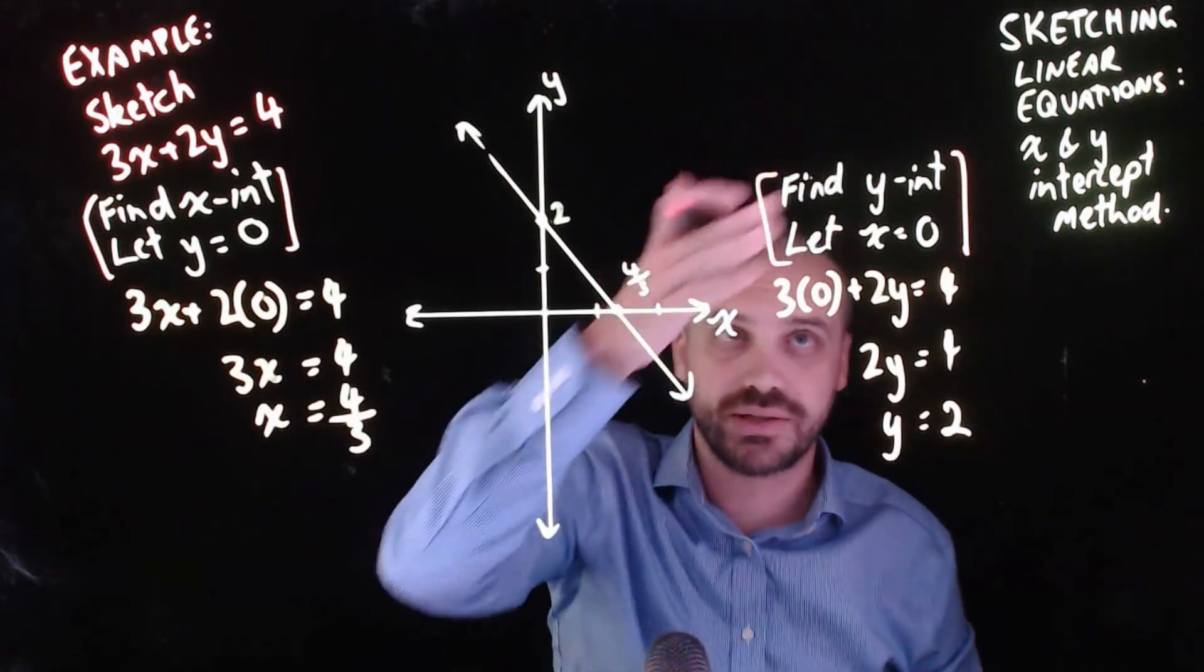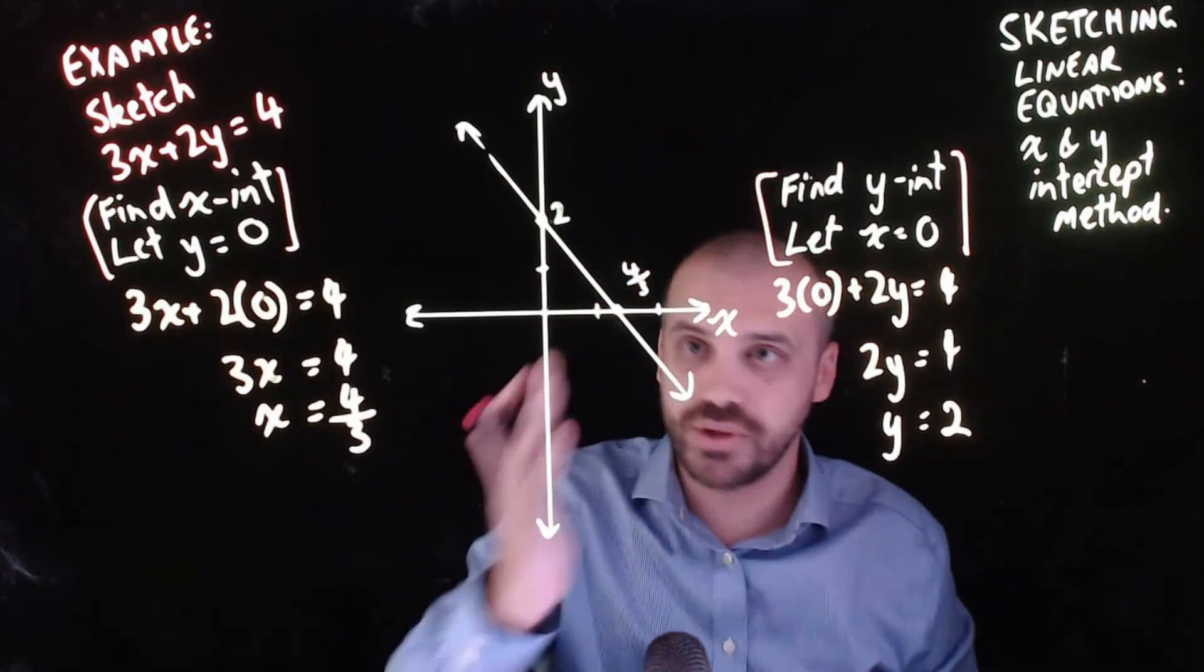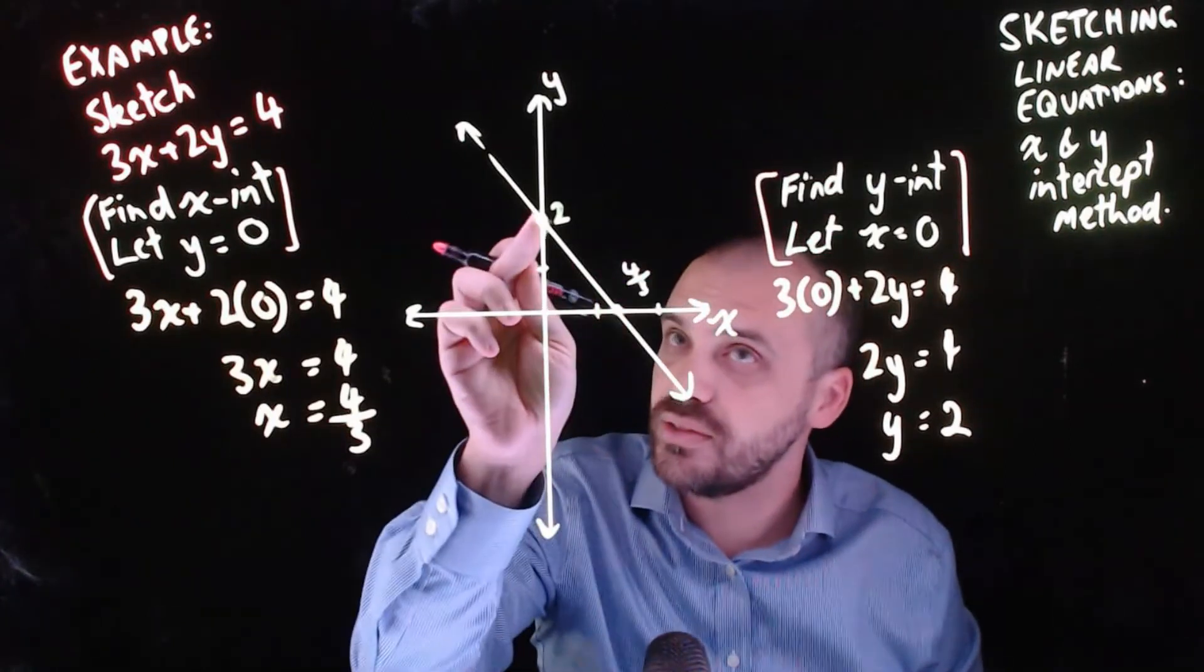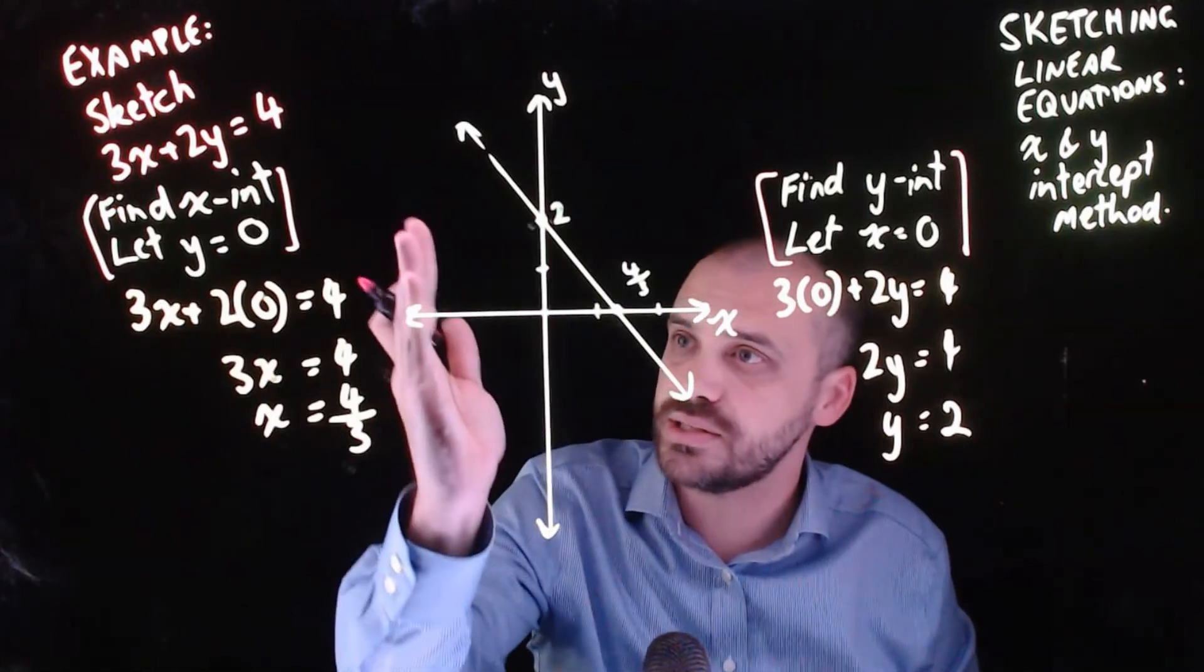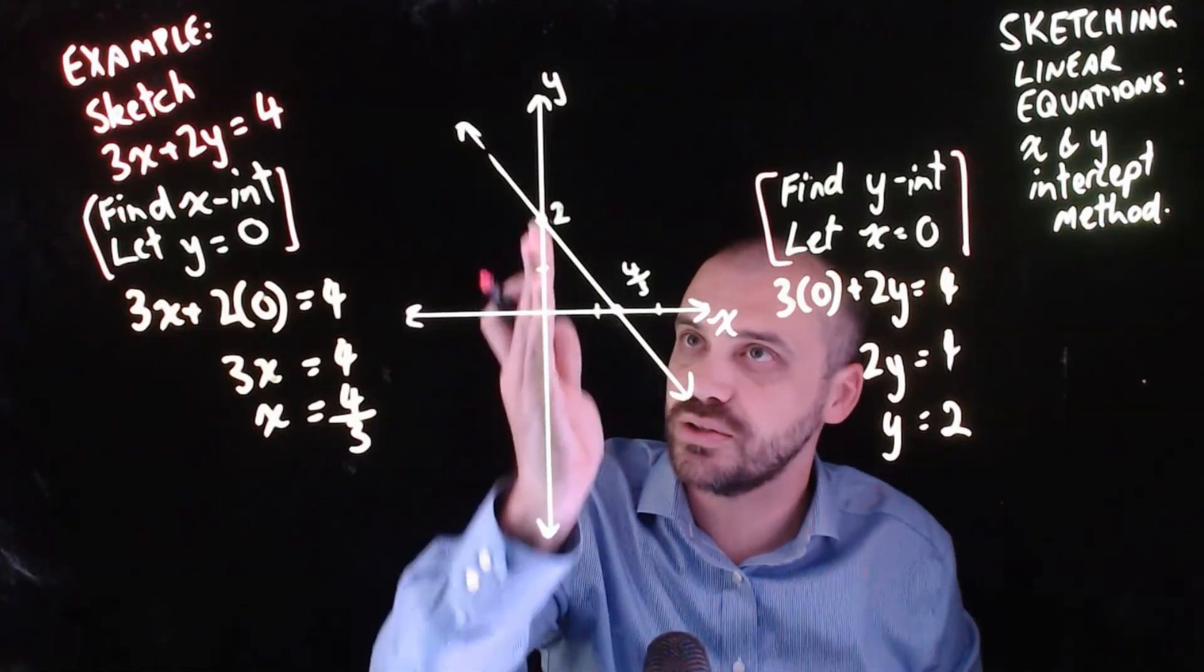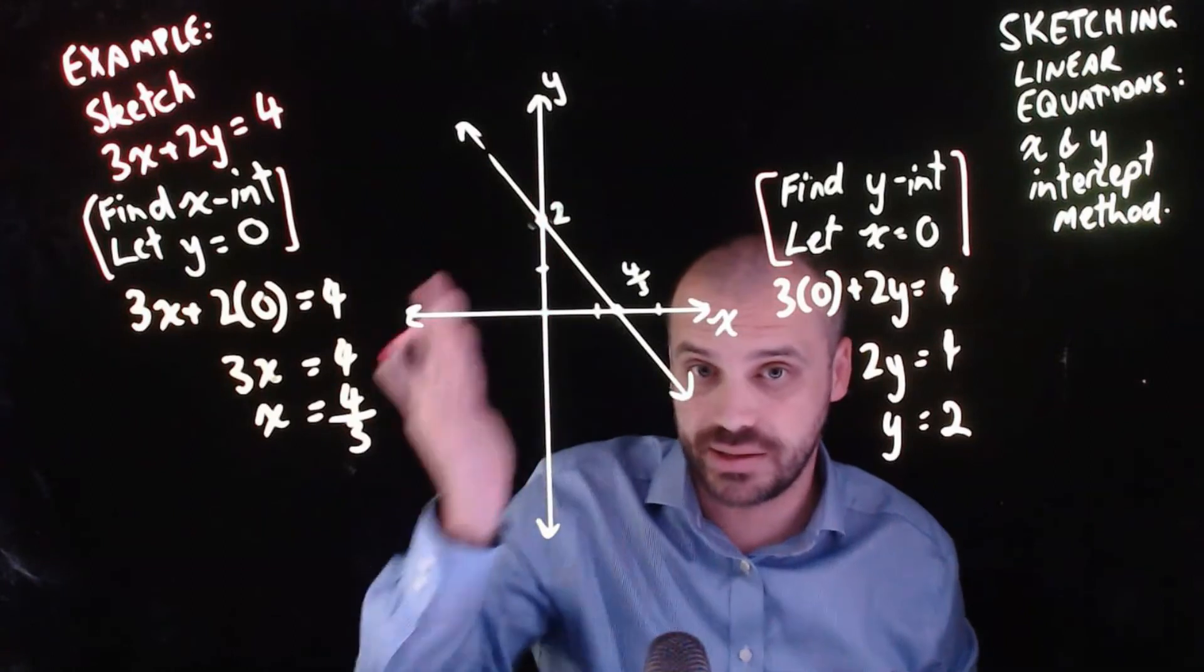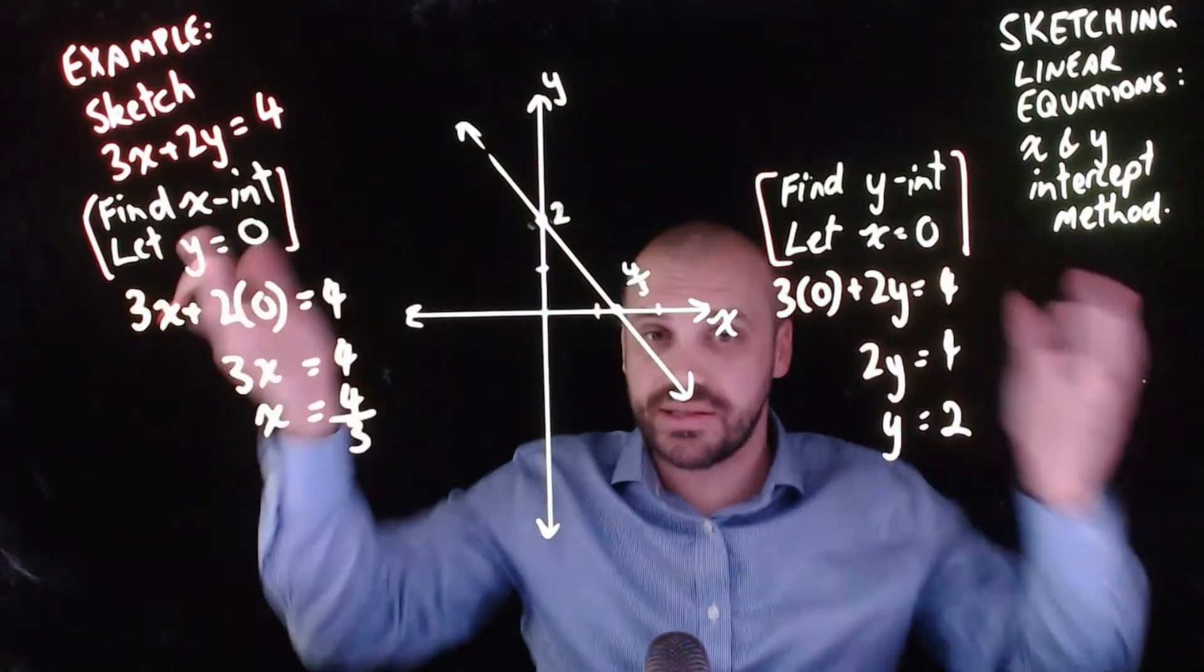Similarly, find the y intercept: let x equal 0. Why does that work? Because at that y intercept, if we move along the x axis, the y intercept is where x equals 0. That's why these sentences work.